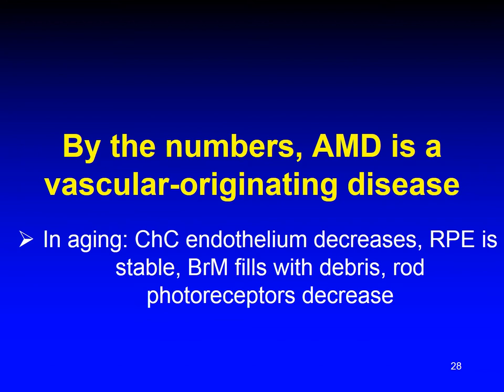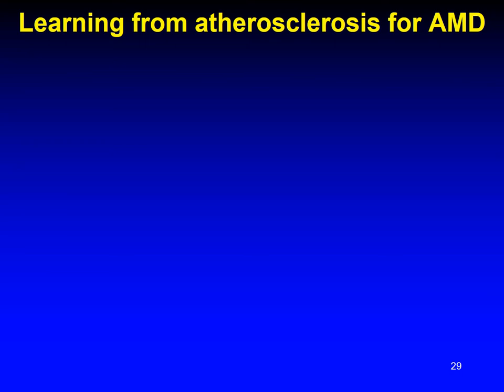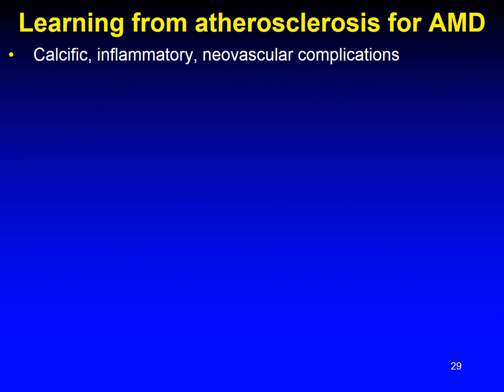By the numbers, AMD is a vascular-originating disease. In aging, the choriocapillary endothelium decreases. The RPE is stable. Bruch's membrane fills with debris and lipids, and the rod photoreceptors decrease in number. We interpret this to mean that the RPE takes care of itself and supplies less to the photoreceptors over time.